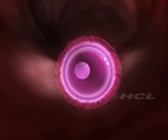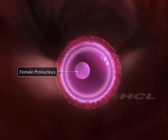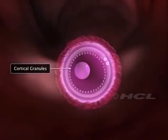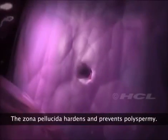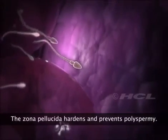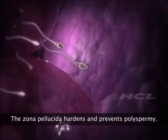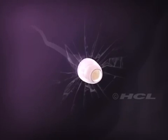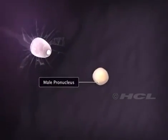The nucleus of the ovum is now called the female pronucleus. The cortical granules present below the egg plasma membrane release enzymes which harden the zona pellucida and block further entry of sperms. The sperm nucleus now enters the cytoplasm of the ovum and is termed the male pronucleus.